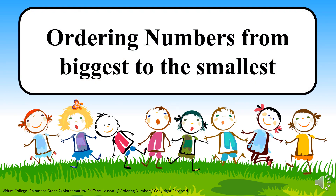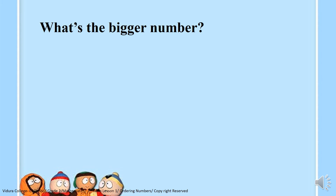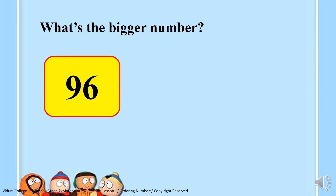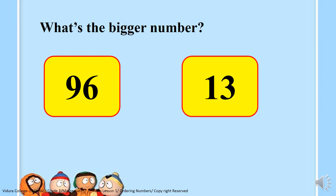Now we are moving into the next one — ordering numbers from biggest to the smallest. We are doing the other way around, starting from the biggest and finishing with the smallest number. Now let's see this. What's the bigger number — we have 96 and we have 13. You already know how to find the big and the small number. So what's bigger — is it 96 or 13? Yes, it's 96.